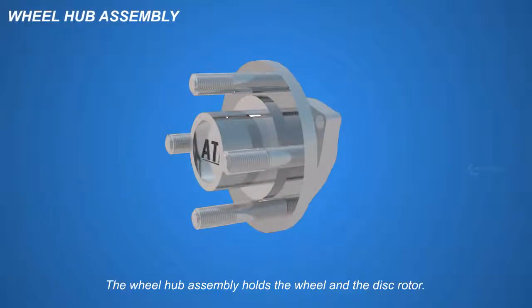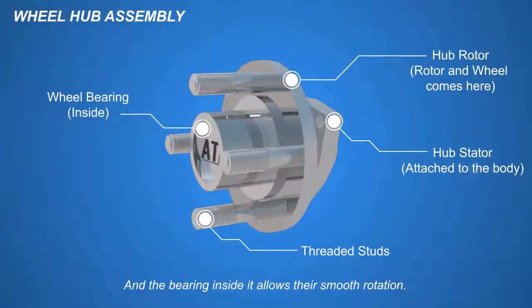The wheel hub assembly holds the wheel and the disc rotor, and the bearing inside it allows their smooth rotation.